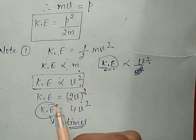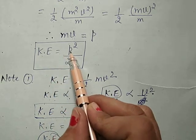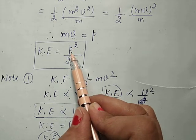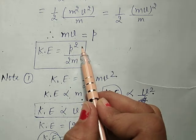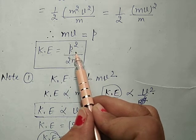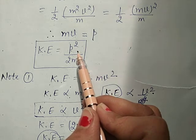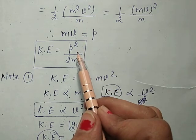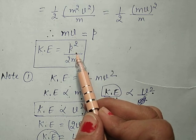Kinetic energy is directly proportional to linear momentum P, where P = mv, so KE is proportional to mass times velocity. Students, today you will revise all these derivations in your notebook and do practice. Thanks.